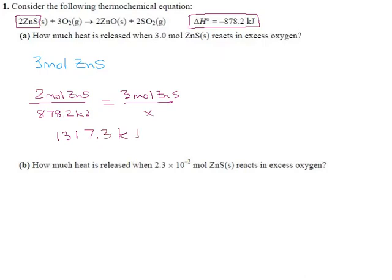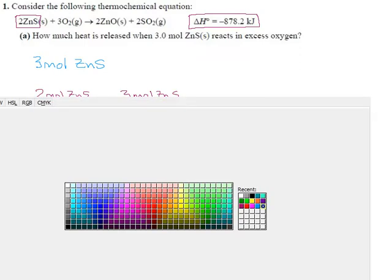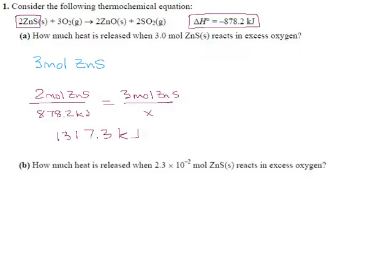You go 3 times 878.2 divided by 2, and that comes out to 1,317.3 kJ. That is one way you could do it. Cross multiplication works great. I highly recommend it. Another way you could do it is you could say, I've got three moles of zinc sulfide, times, and you make a ratio out of the ones in the reaction.